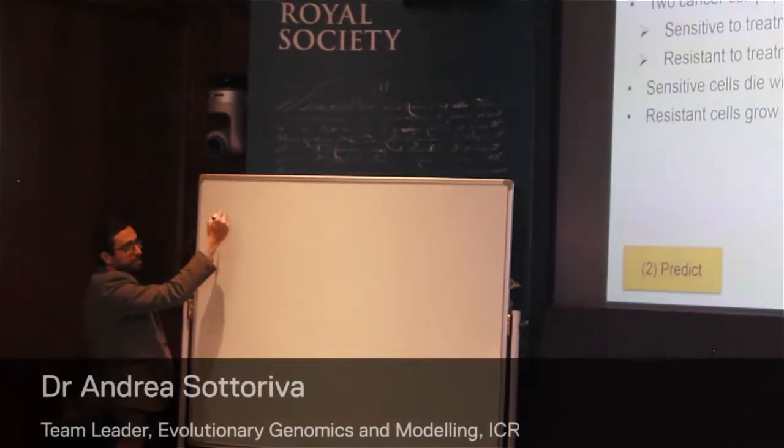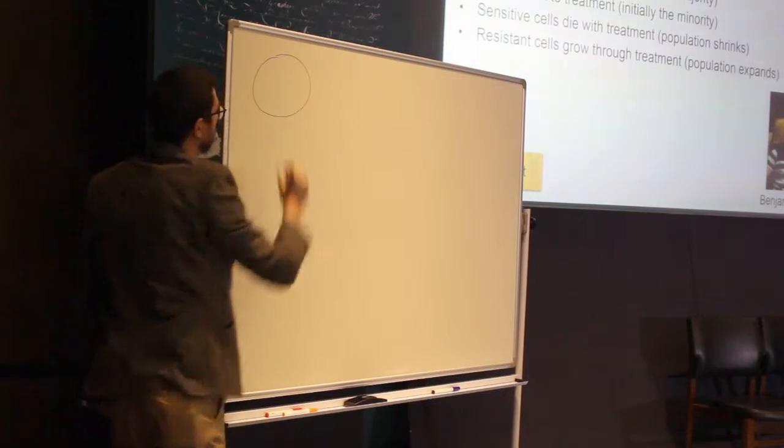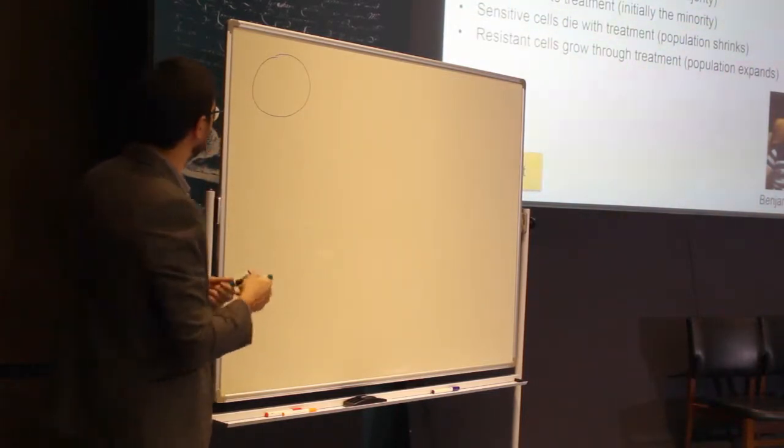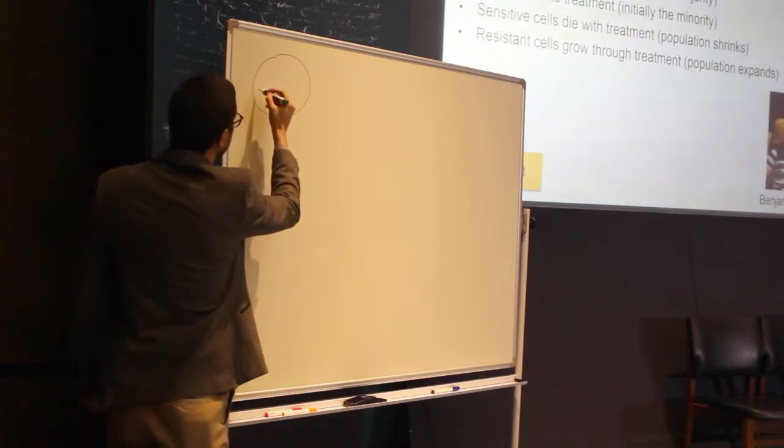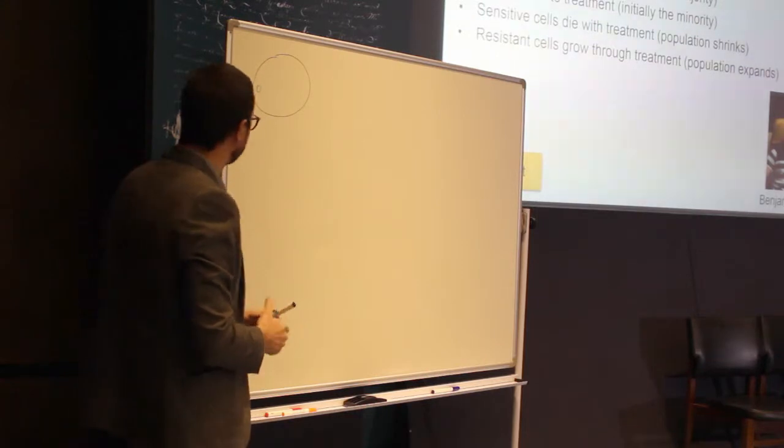So we have a system, we have our cancer, which is mostly composed of sensitive cells in black. These cells respond well to treatment. But we know that there is a small unobservable population of resistant cells at the beginning of my treatment.